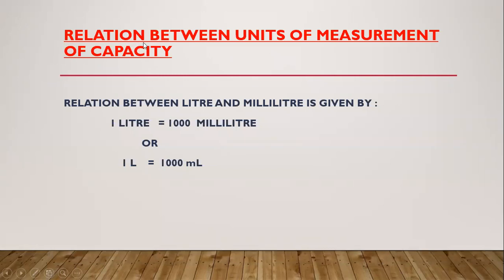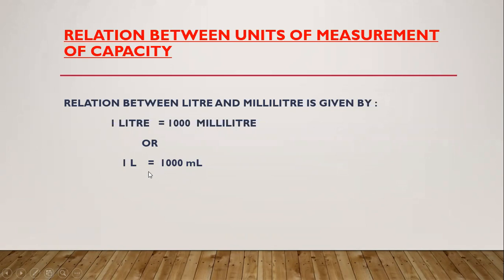Now we will look at the relation between units of measurement of capacity. There are two units: for big quantities of liquid we use litres, and for small quantities we use millilitres. The relation between litre and millilitre is: 1 litre is equal to 1000 millilitres. This relation is useful for solving problems and for the conversion of units.